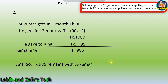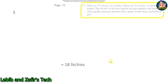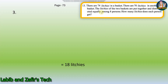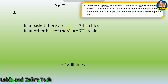Now let's go to the third word problem. There are 74 leeches in one basket and 70 leeches in another basket. The leeches of the two baskets are put together and distributed equally among eight persons. How many leeches does each person get?